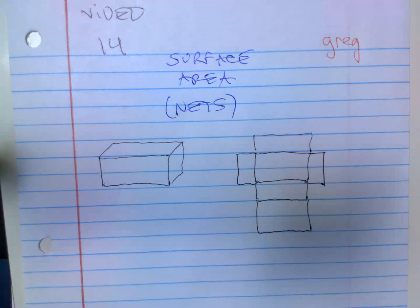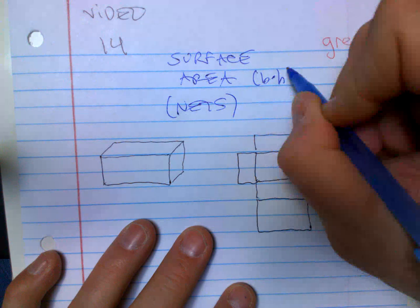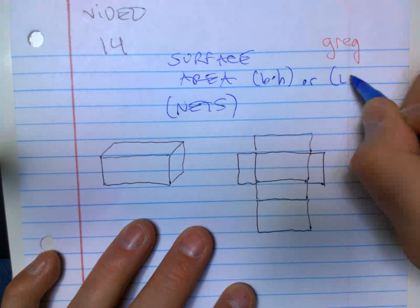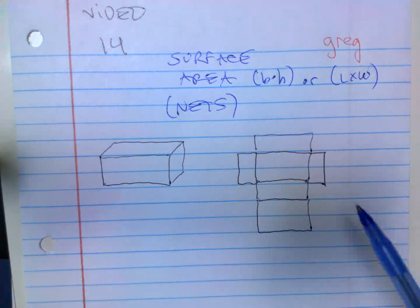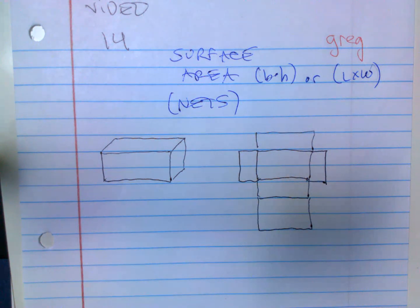So surface area is you're doing the area. Area is base times height or length times width, right? But you got to do it of every side. Nets is a way you can see it better and understand it a lot better sometimes, but it's more time consuming.